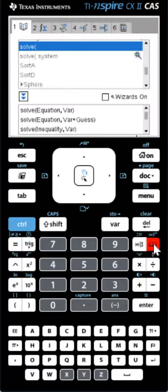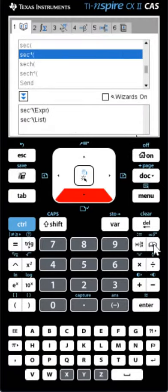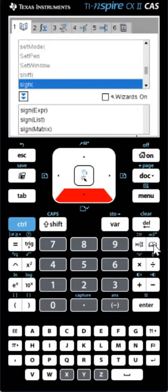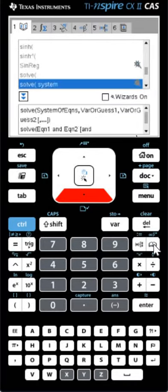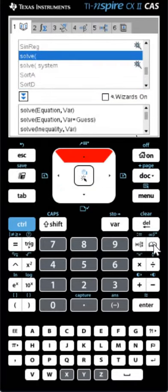Click on Catalog, click S to get to the S section, and then scroll down until you find the solve option. There you have it.